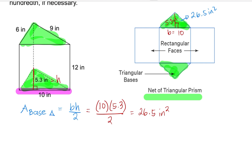The area of this base is 26.5 inches squared, and the bottom is the same as the top, which is also 26.5 inches squared. So we found the area of the bases. Now, if we notice that the sides of the triangular prism are rectangles, we are going to find the area of each side using the formula for a rectangle.